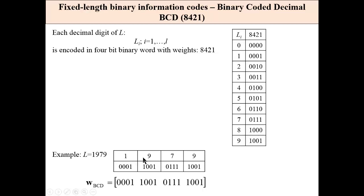For example, 1979, each digit is encoded by a four bit string of bits. And we will obtain the following code word, which is always a multiplication of four. So that corresponds to decimal number 1979.